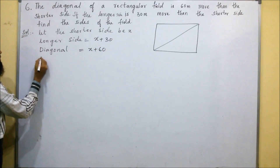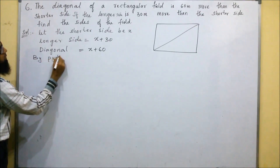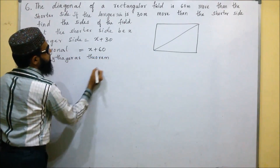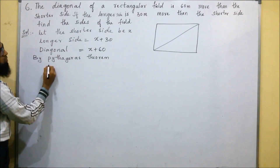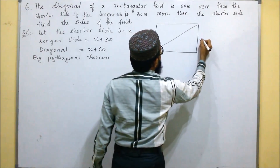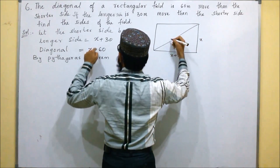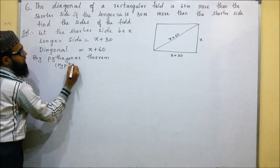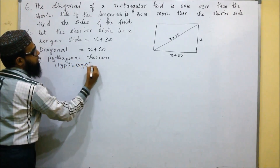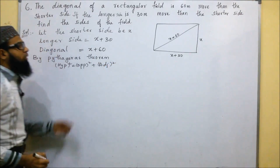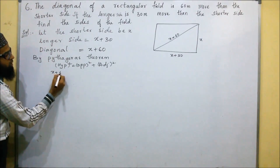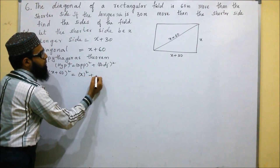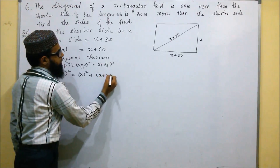By the Pythagorean theorem, we know that hypotenuse squared equals opposite squared plus adjacent squared. So here the shorter side is x, the longer side is x plus 30, and the diagonal (hypotenuse) is x plus 60. So we write: (x + 60)² = x² + (x + 30)².